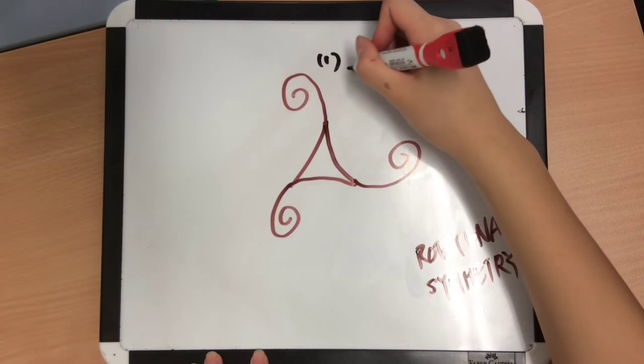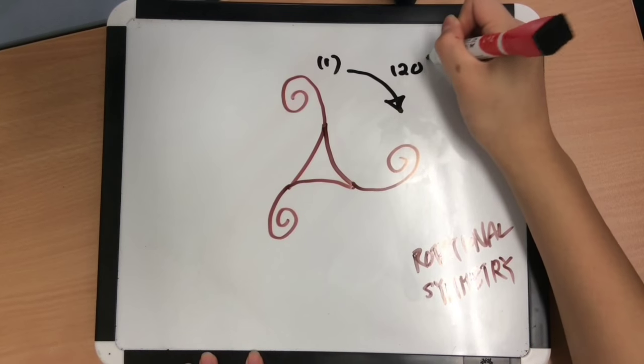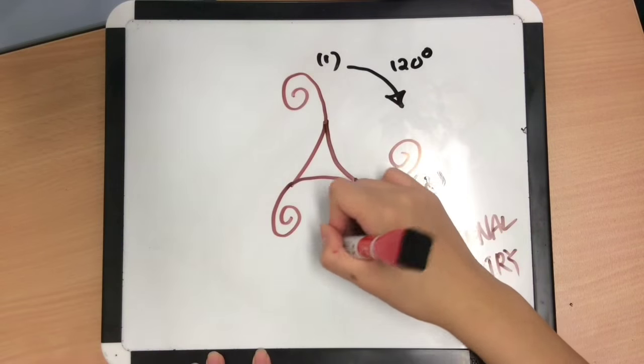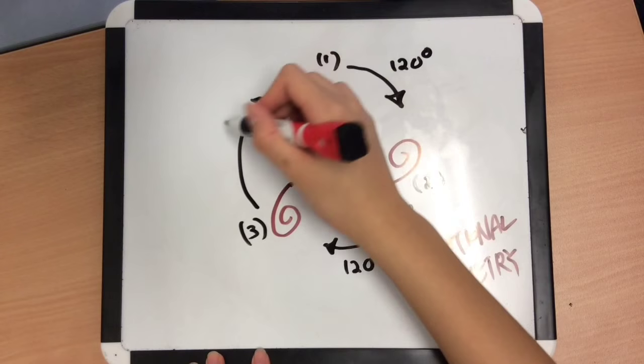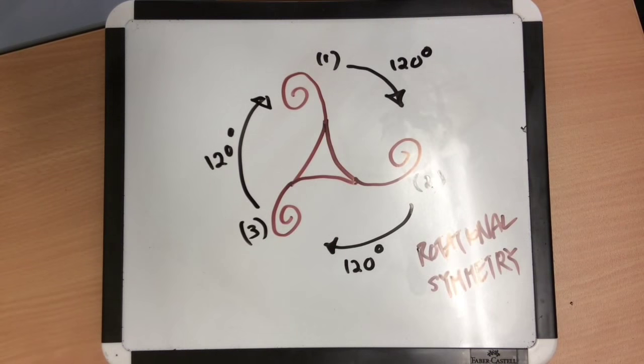And it also has the angle of rotation, the degree of the angle away from the previous match to the next one of 360 over the order of rotation, which is 360 over 3 equals 120 degrees.